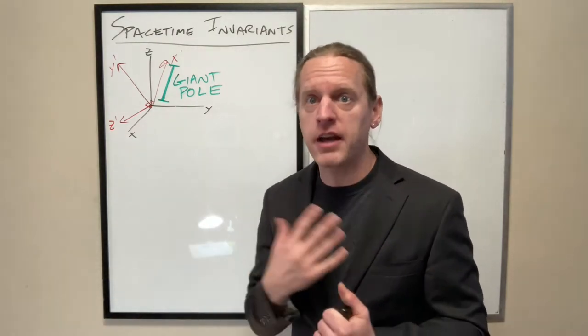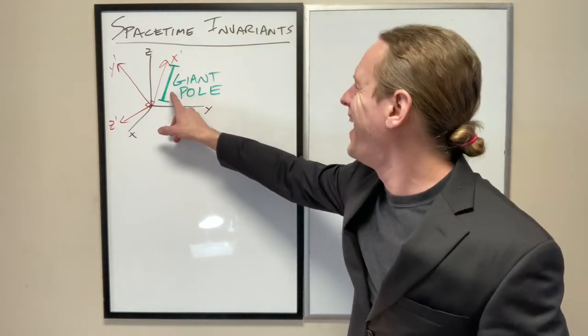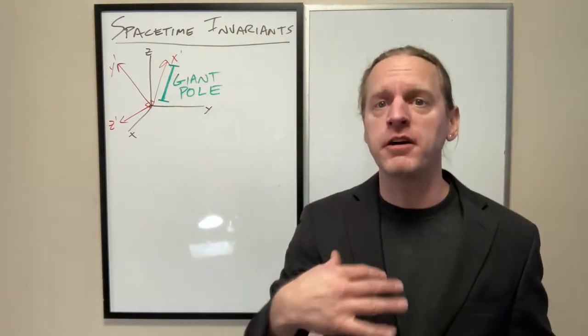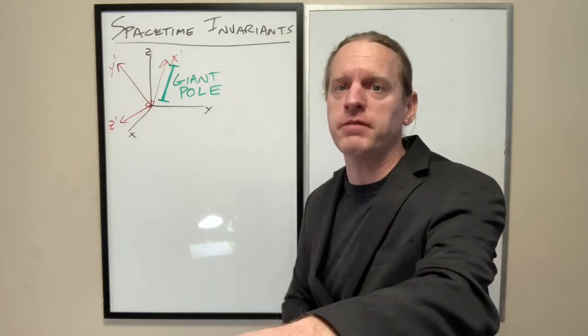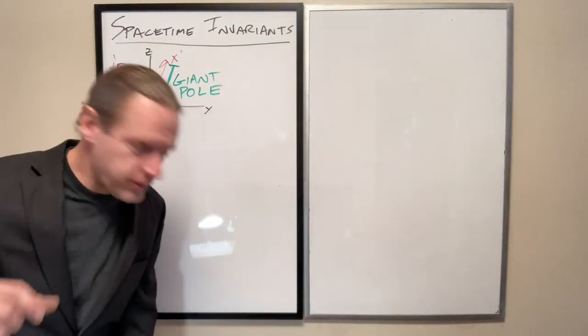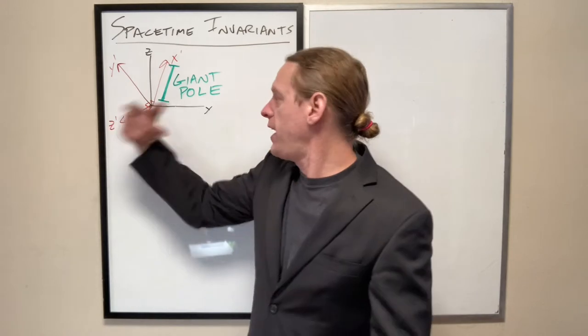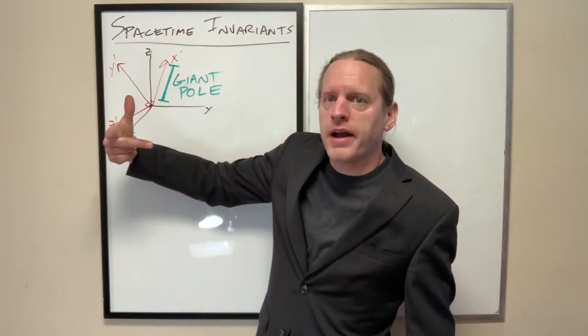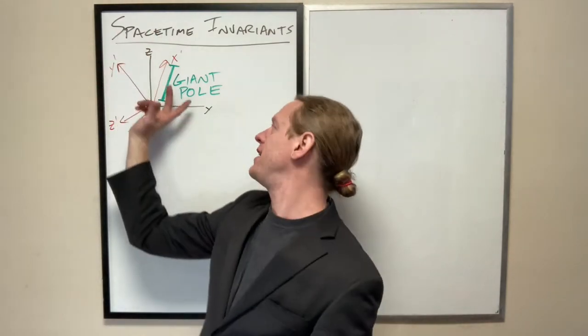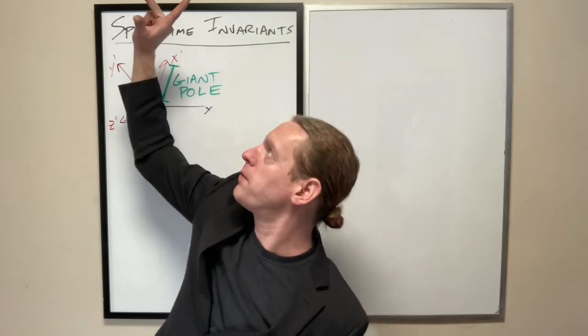And so just as a basic everyday example of this, imagine we have a giant pole, that's what I have in green there, and imagine there are two different observers with two different reference frames. So the one that I've drawn in black here, we have an x, y, and z coordinate in black. And then at a very different angle, I have completely arbitrary rotated in red some other observer's coordinate system, x prime, y prime, z prime.